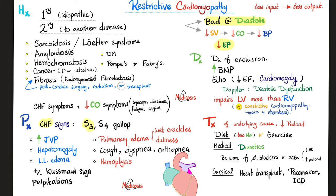Signs and symptoms include CHF, low cardiac output, palpitations, and S3 gallop. There is also the possibility of a positive Kussmaul sign. When the heart is restricted from filling, blood accumulates in the right atrium, then the superior vena cava, then the internal jugular vein. During inspiration, the jugular veins should empty blood into the heart, but if the heart cannot relax and accept that blood, the neck veins expand during inspiration — a positive Kussmaul sign, the opposite of normal.